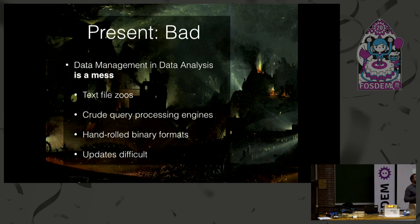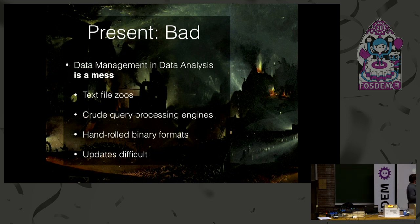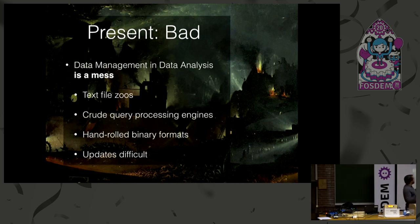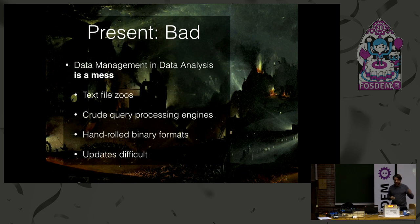Once those files are loaded, there are crude query processing engines, for example the one in Pandas or the one in the R environment. Once people decide that CSV files are too slow, they start inventing their own hand-rolled binary formats on disk. This results in a zoo of one-off solutions, which makes secondary problems — like changing anything about the data — very difficult. This is bad. We don't want this, and these are solved problems. We have data management systems that have been around for 50 years.